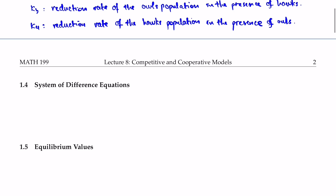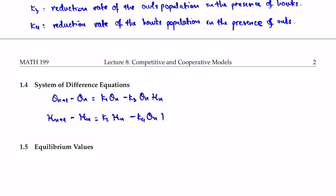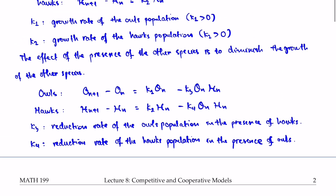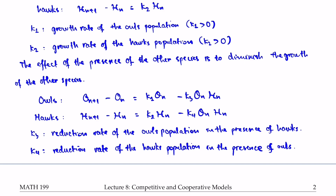To summarize the system of difference equations: O sub n+1 minus O sub n equals k1 times O sub n minus k3 times O sub n times H sub n; and H sub n+1 minus H sub n equals k2 times H sub n minus k4 times O sub n times H sub n. All parameters k1, k2, k3, and k4 must be positive numbers.